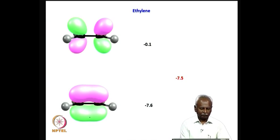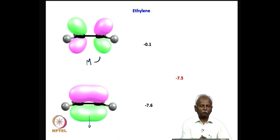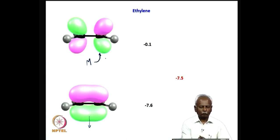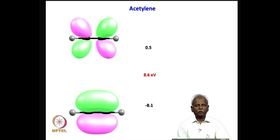It is from here that we have donation to the metal. As we had mentioned earlier, it is possible for a metal, when bonded to the olefin, to donate electron density into the pi star orbital of the olefin. As long as the symmetry is suitable, it would be possible to form a pi bond with the pi star orbital of ethylene. The acetylene has very similar orbitals — there are two of them, and one is orthogonal or perpendicular to the other.